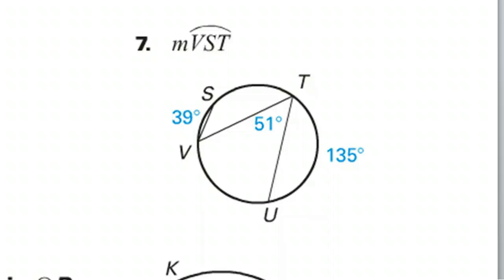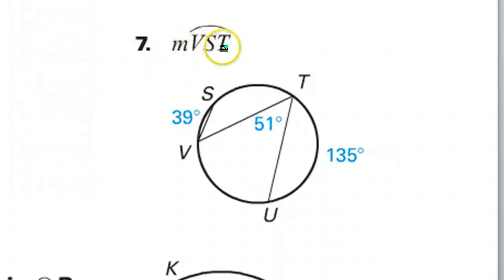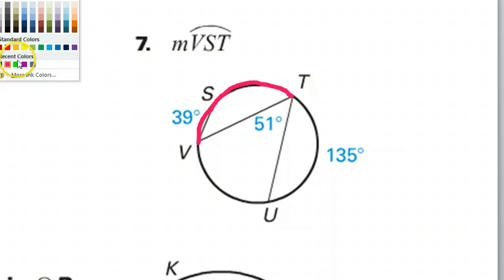How about number 7? A little bit more going on. Let me color our target. Arc VST. So this is what we're trying to find. Arc VST. That is our target. Now, what do we have so far?